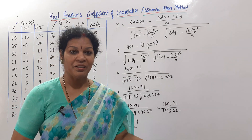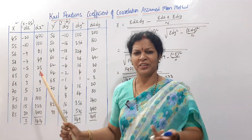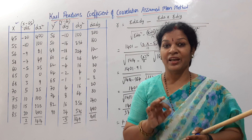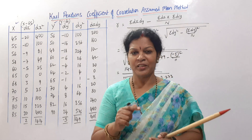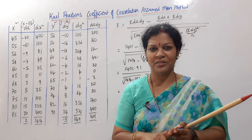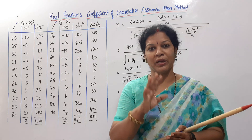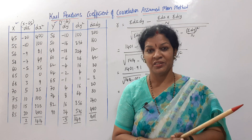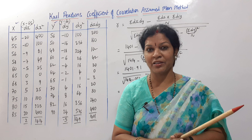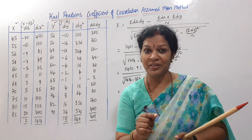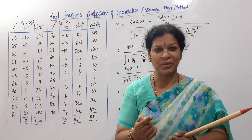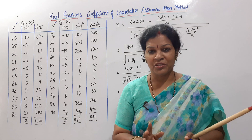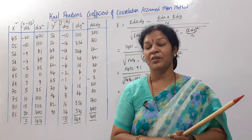It's easy — you just have to be careful with the formula. Calculations are rough work anyone can do. This is Karl Pearson's coefficient of correlation in the assumed mean method. Let me know in the comments which method feels easier — assumed mean or actual mean. Stick to one method. Check your university's past papers; generally they don't specify which method to use.